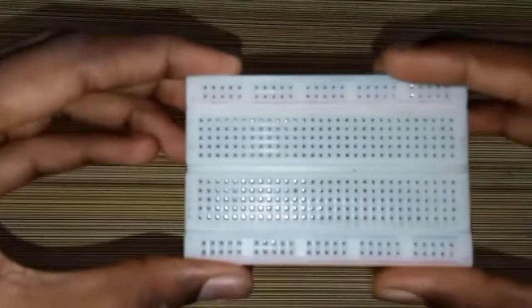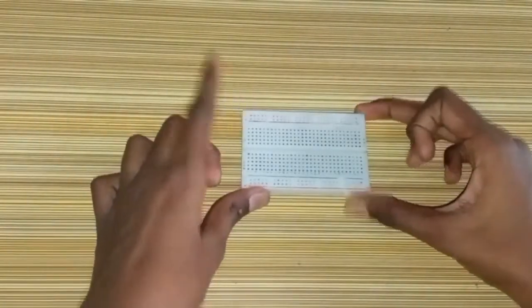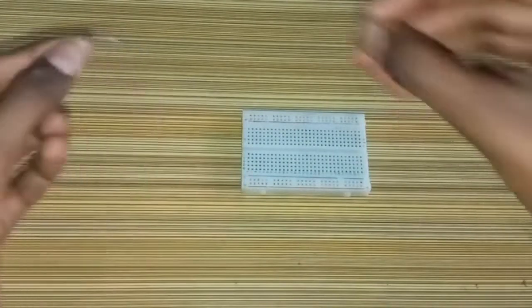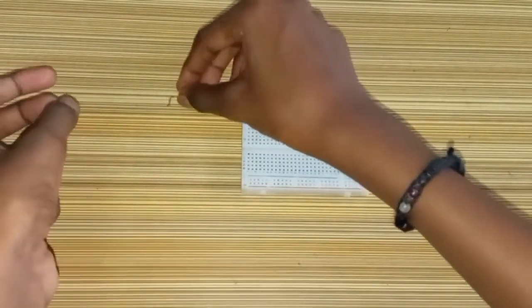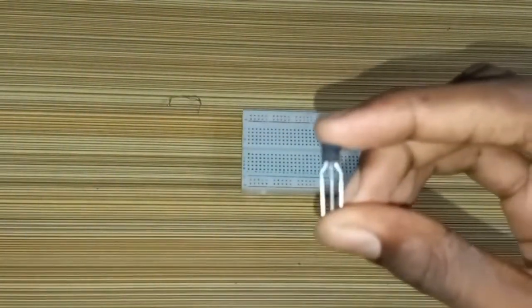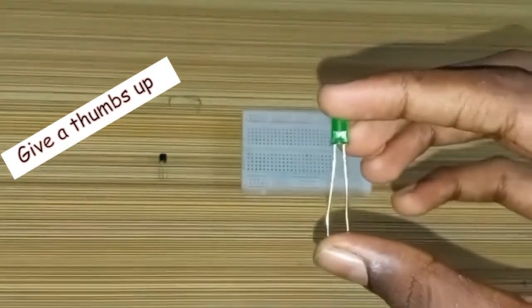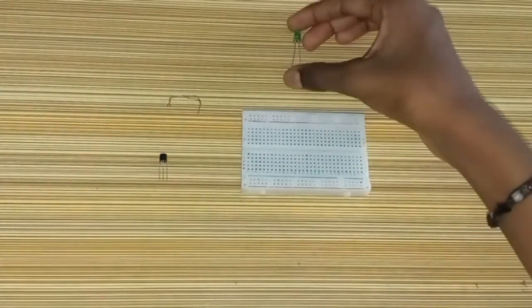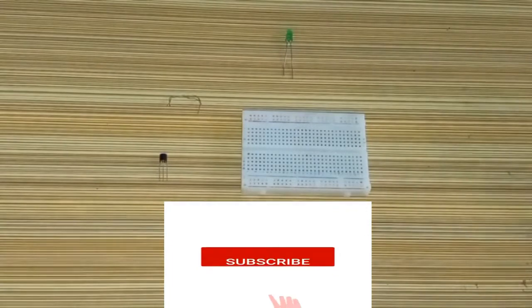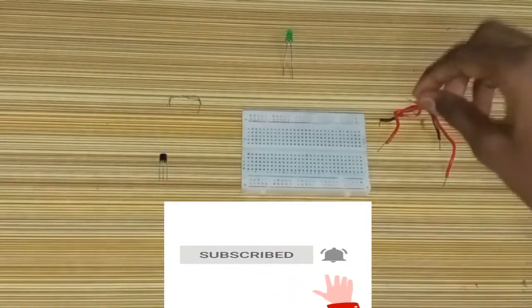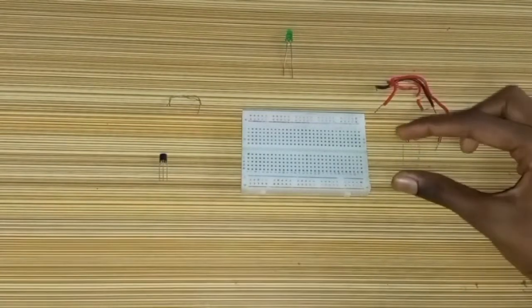The requirements for this project are a mini breadboard, two non-insulated wires that will act as the touch sensor, a BC547 transistor which I will explain in this video, an LED of any color (I chose green), some wires both big and small, copper wire, and a 10k resistor.